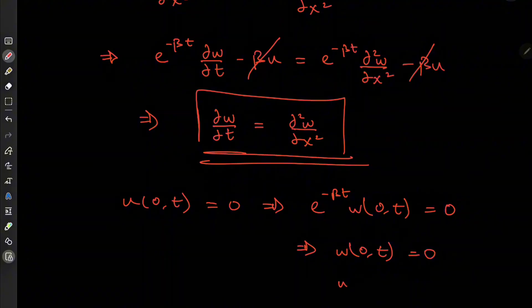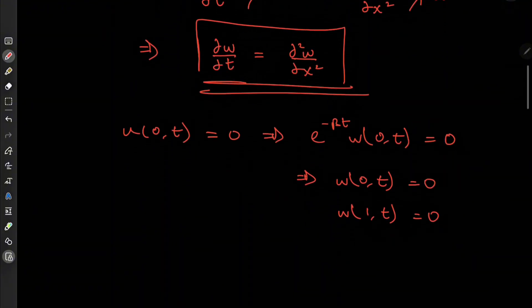And by similar token, we have w of l and t being equal to 0. And of course, for the initial profile, u of x,0 being equal to f of x, plug in t equal to 0, and the exponential term is just a 1. So that is w of x and 0.